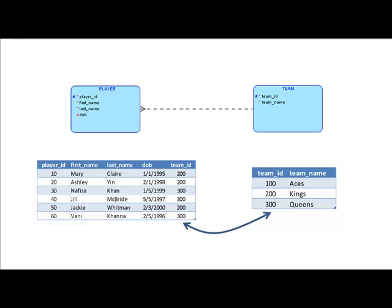In this example, every player does actually belong to a team, and every team actually seems to have players. But it's possible that you've got players who don't belong to any team, and teams that have no players. The team ID field in the player table is what tells us the team to which the player is connected, and that's nothing but the relationship between the entity types player and team.